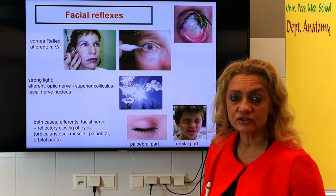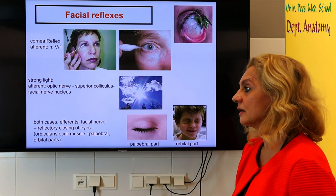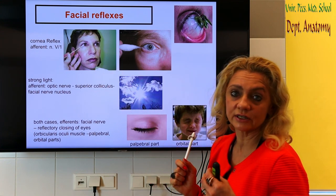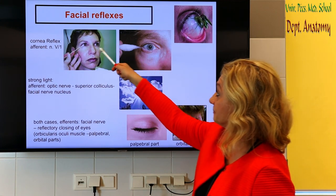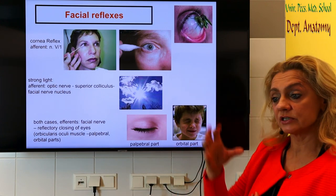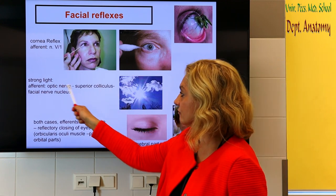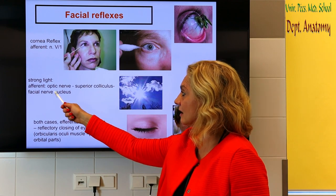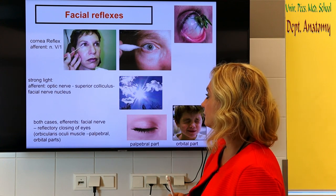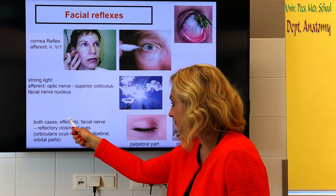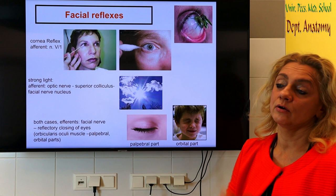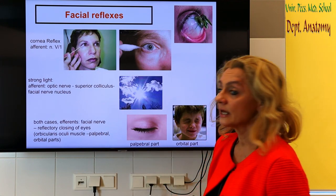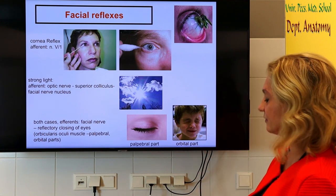The last group of reflexes are the facial reflexes, where the facial nerve is involved in closing the eye. The corneal reflex is something neurologists also examine: the afferent is the ophthalmic branch of the trigeminal nerve — you touch the cornea, which is very sensitive, and the response is eye closure. Everyone knows that if light suddenly shines in your eyes, you close them; in this case the afferent is light information through the optic nerve. In both cases, the facial nerve is the efferent, producing reflexive closure of the eye via the orbicularis oculi muscle. If the light is not very strong, only the palpebral part closes the eye; if very strong, the orbital part strongly closes the eye.